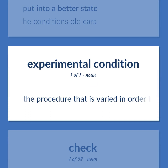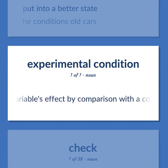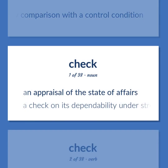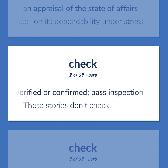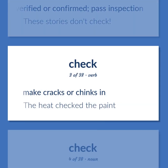Experimental condition: the procedure that is varied in order to estimate a variable's effect by comparison with a control condition. Check: an appraisal of the state of affairs; a check on its dependability under stress. Be verified or confirmed; pass inspection — 'These stories don't check.' Make cracks or chinks in — 'The heat checked the paint.'